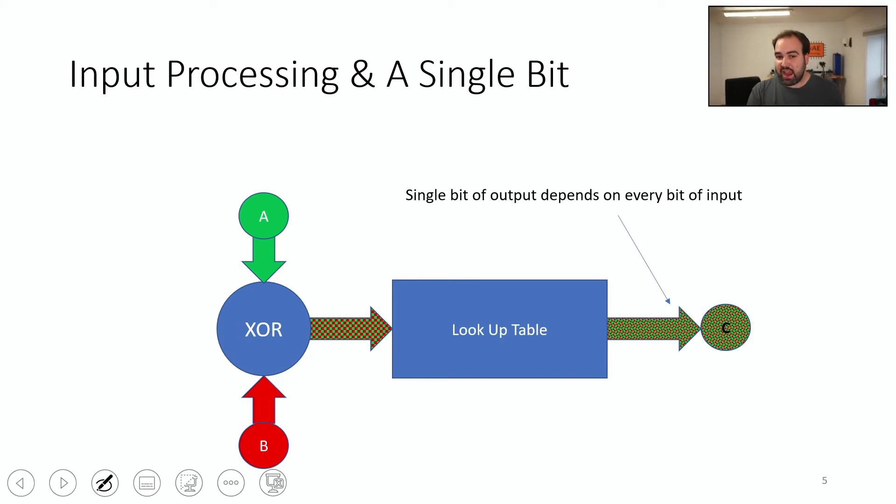But a single bit of output depends on every bit of the input. So if you change any bit of the input, potentially any other bit of the output could change. And it depends what value of the lookup table you're hitting here. But the point is that it's no longer an exact bit-to-bit mapping.